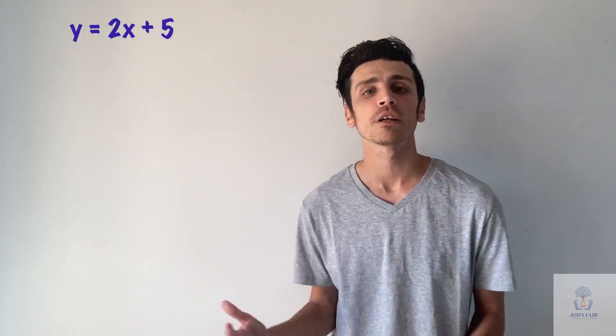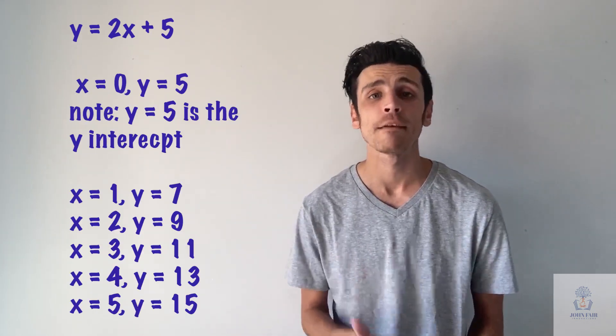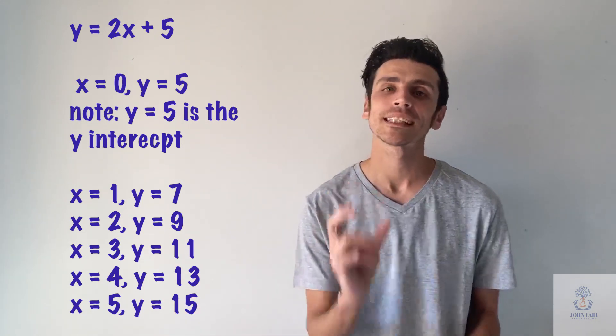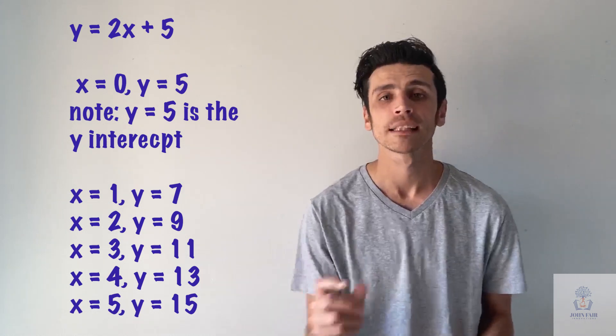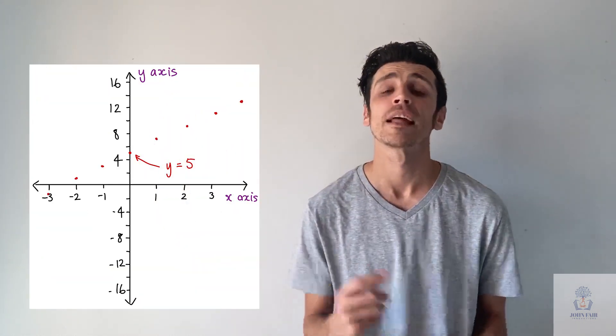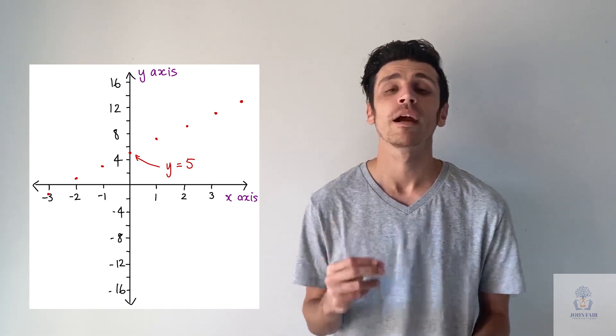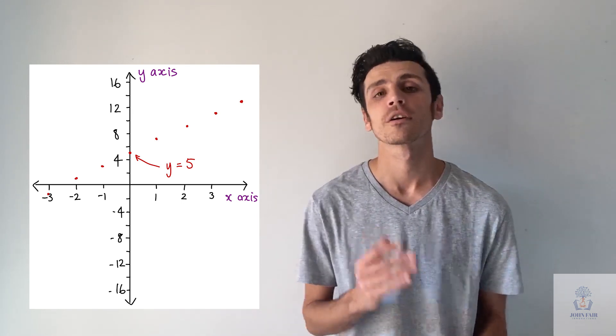So if we keep going across, we know that it will go 5, 7, 9, 11, 13. It'll go up in 2s, but it starts at our 5. And that's what we're referring to. And that's why it's so important when we look at our y-intercept, because that's where it starts along the vertical line.